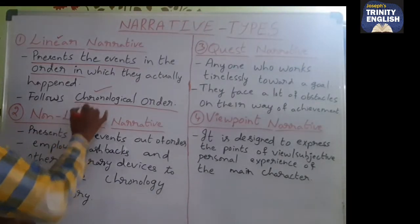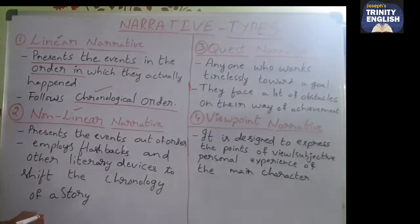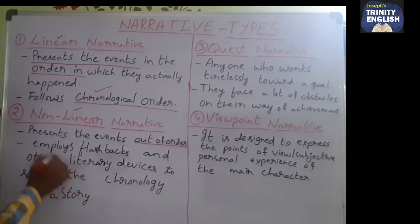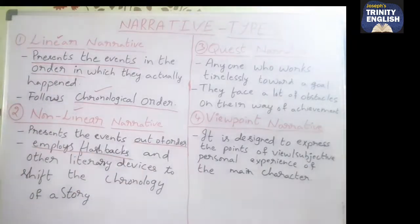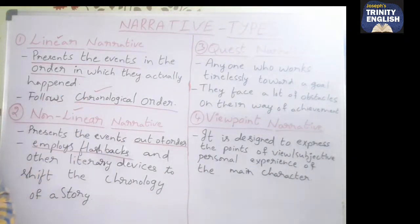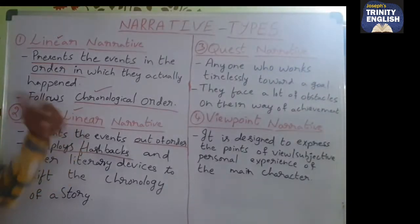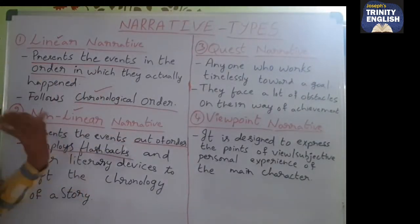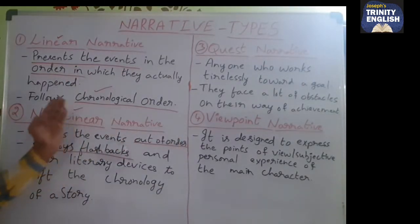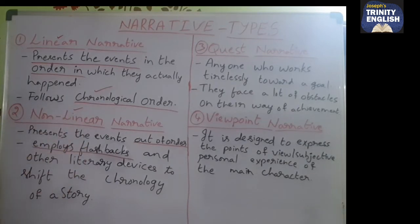The next type is non-linear narrative. Non-linear narratives present events out of order. The writer or narrator employs flashbacks, bringing them in between the main story. If you watch certain movies, read novels, or watch serials, you can see flashbacks being used. The writer goes out of the main track and brings in additional narratives or flashbacks, using other literary devices to shift the chronology of the story.